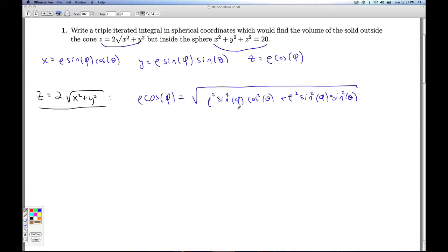Now you notice I got a rho squared sine squared phi in common. I can factor that out and Pythagorean magic happens. I get cosine squared plus sine squared is 1. So I get rho cosine phi is the square root of rho squared sine squared phi. Now remember, in the definition of spherical coordinates, rho is bigger than or equal to 0, and phi is always between 0 and pi. That means that the sine of phi is always bigger than or equal to 0.